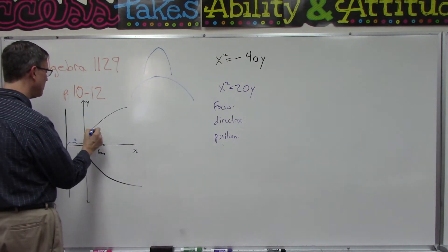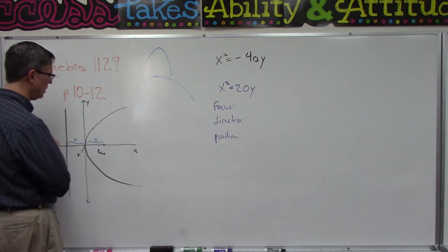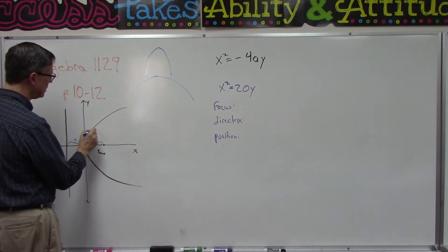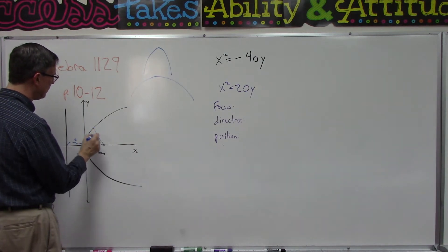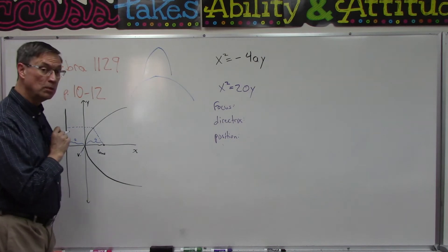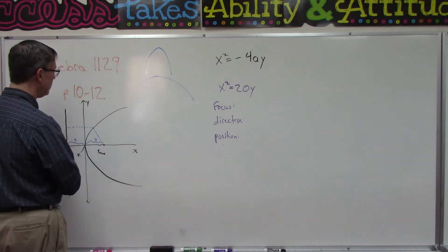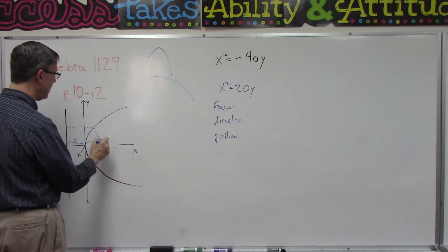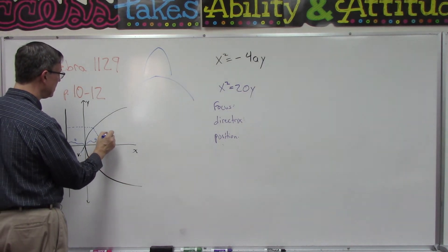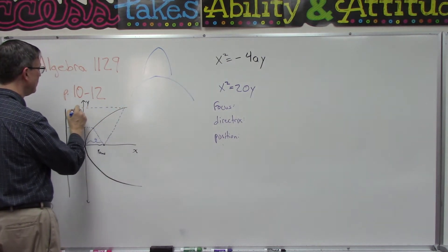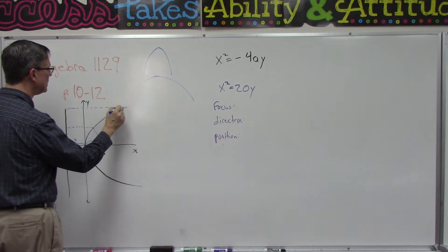But if I were to go to a point, let's say right here on this graph of this parabola, the distance from here to the focus and from here to the directrix should be the same. Now you can tell I'm not a very good artist and so it didn't happen that way. And if I go from the focus out to a point even out here and then come straight over to the directrix, this distance here should be the same as this distance.